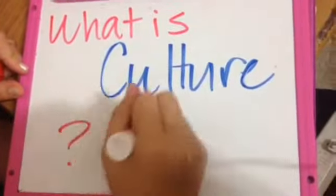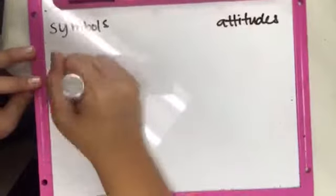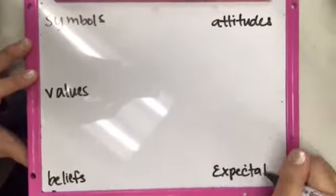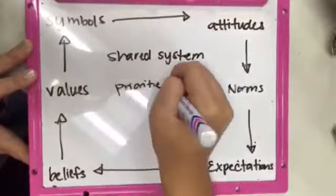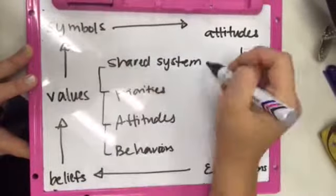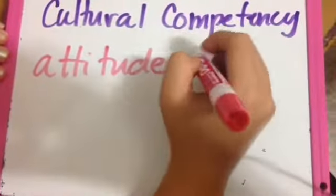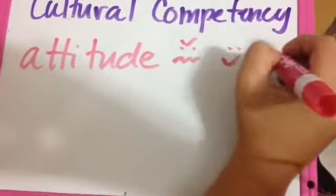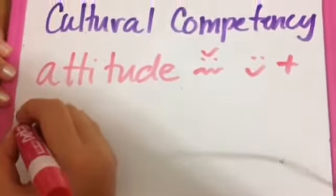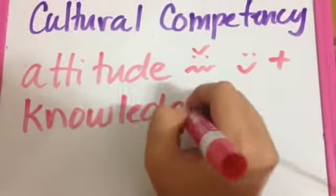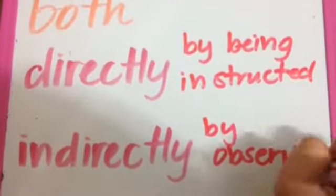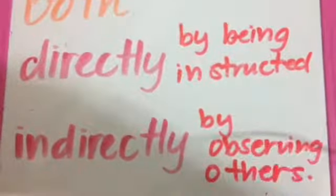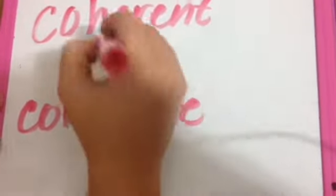What is culture? Culture is a shared system of symbols, beliefs, attitudes, values, expectations, and behavior norms. When dealing with different cultures, you need cultural competency — the ability to interact effectively with people of different cultures. Cultural competency requires a combination of attitude, knowledge, and skills. When you learn culture, you learn it both directly and indirectly, and cultures tend to offer views of life that are both coherent and complete.